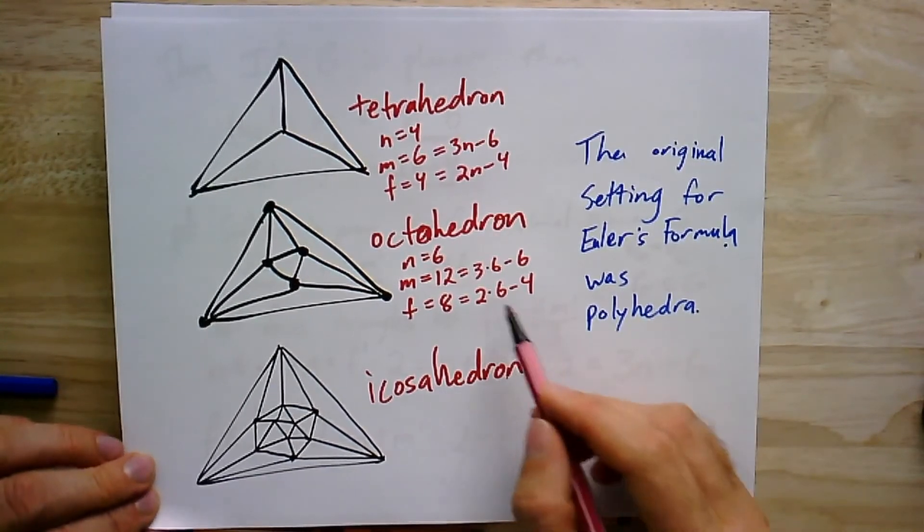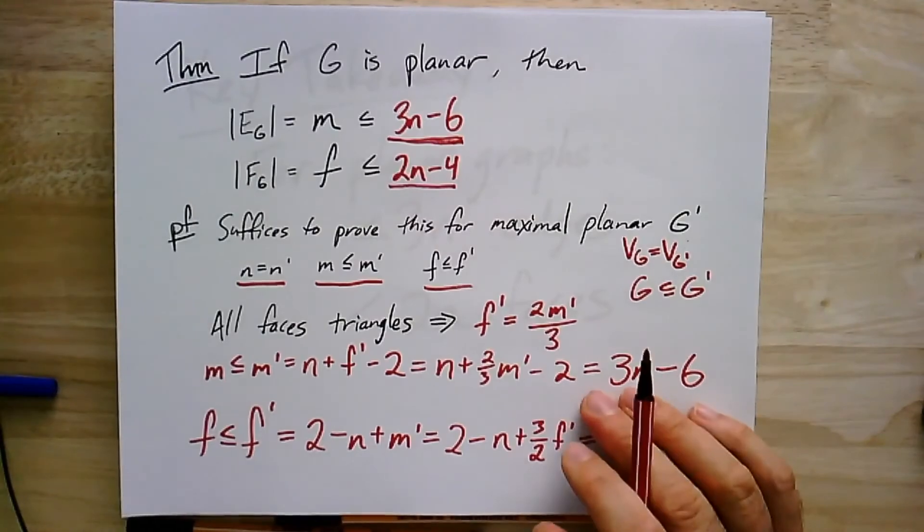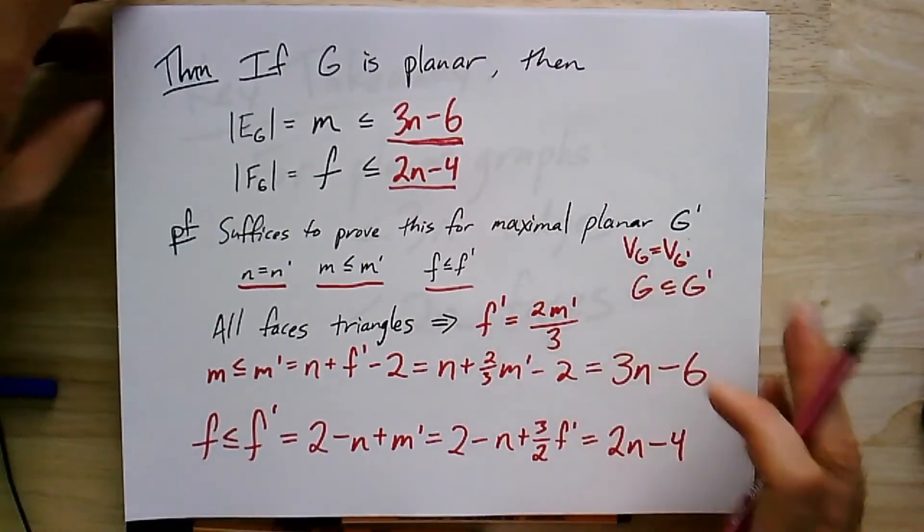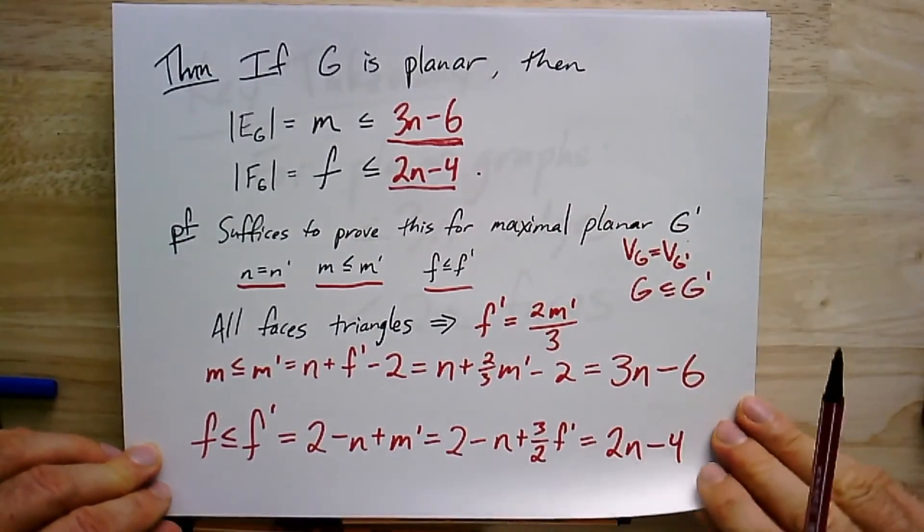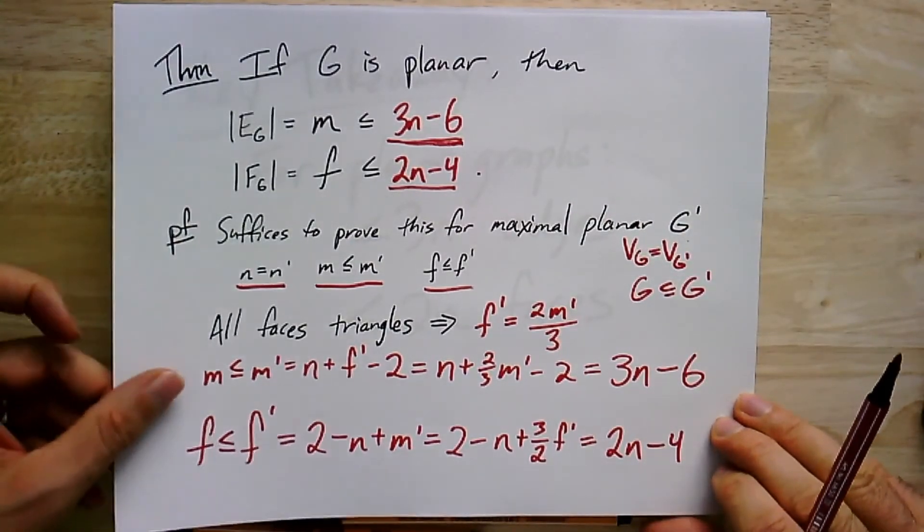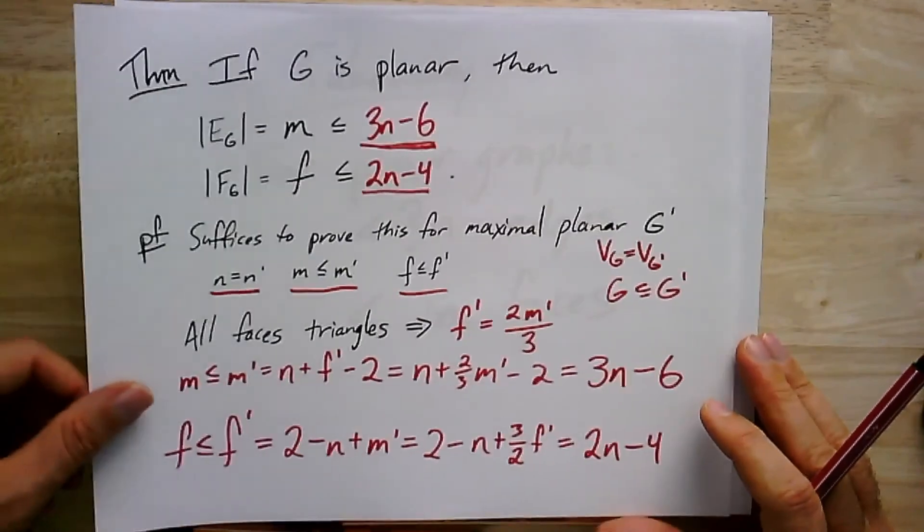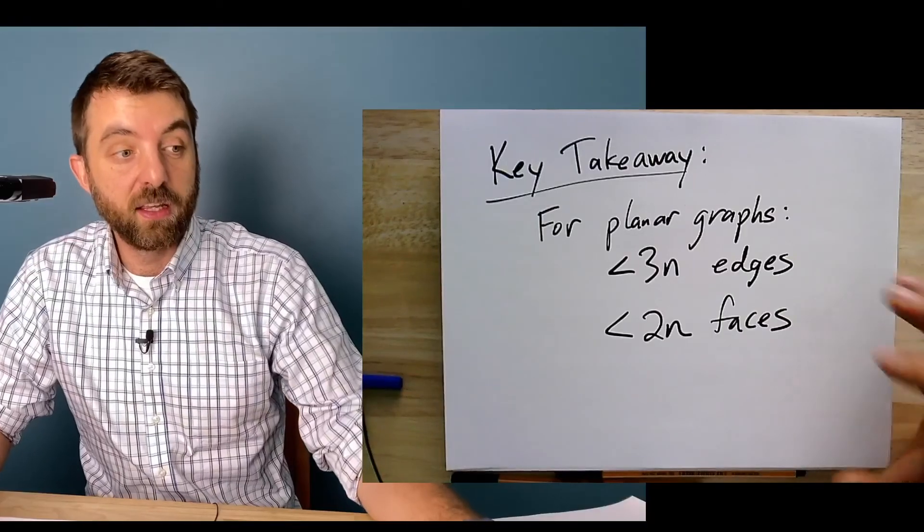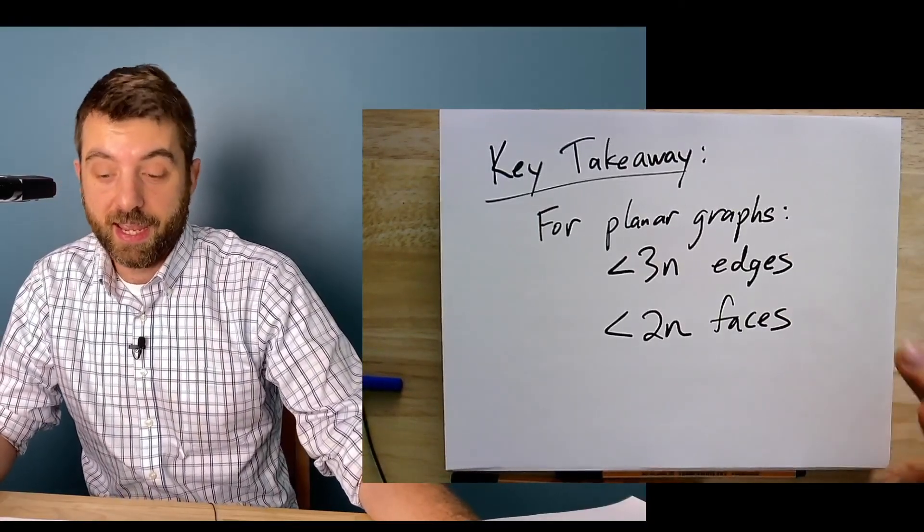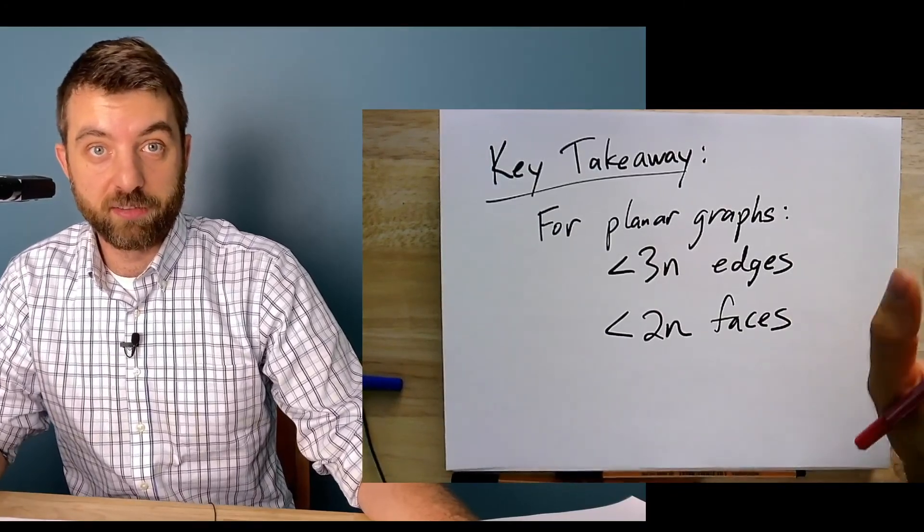But it's just a quick sanity check that these really are the right formulas. We expect to see that not only are these upper bounds, but these are tight upper bounds that are realized in the case of maximal planar graphs, or when the embedding is a triangulation. So the key takeaways is that for planar graphs, you're going to have less than 3n edges and less than 2n faces.